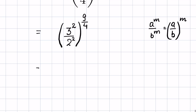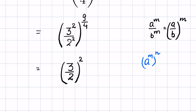So this we can write as (3 upon 2) whole raised to the power of 2. Again, there is an identity: if a raised to the power m, whole raised to the power n, then this equals a raised to the power m times n. So this will be (3 upon 2) raised to the power of 2 times 9 upon 4.